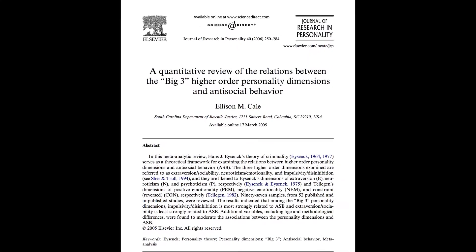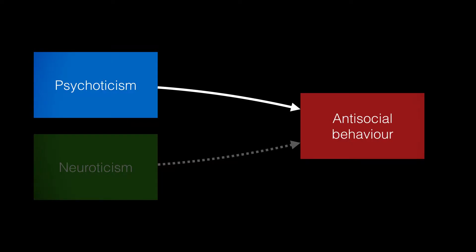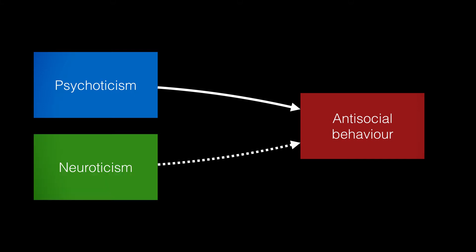Cale published a meta-analysis of Eysenck's PEN model in relation to antisocial behaviour, consisting of 52 studies with 97 samples. Cale concluded that psychoticism was more strongly related to antisocial behaviour, with neuroticism also linked but more weakly. In contrast, the effect of extroversion on antisocial behaviour was minor. This suggests that Eysenck's dimensions of psychoticism and neuroticism most contribute to our understanding of antisocial behaviour.